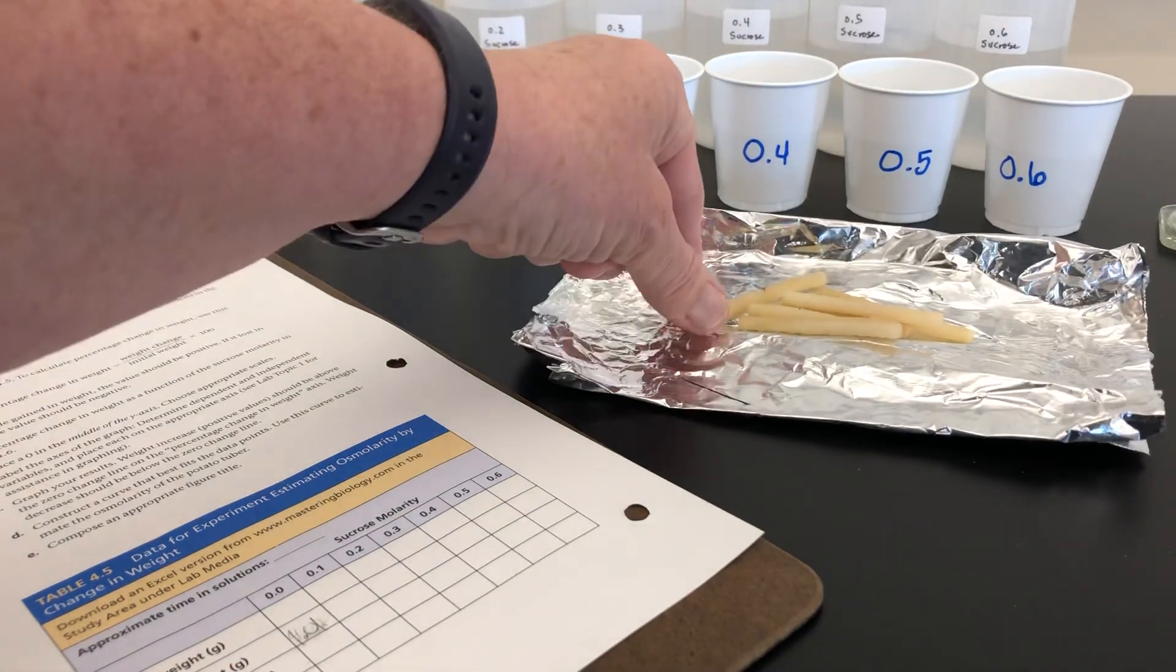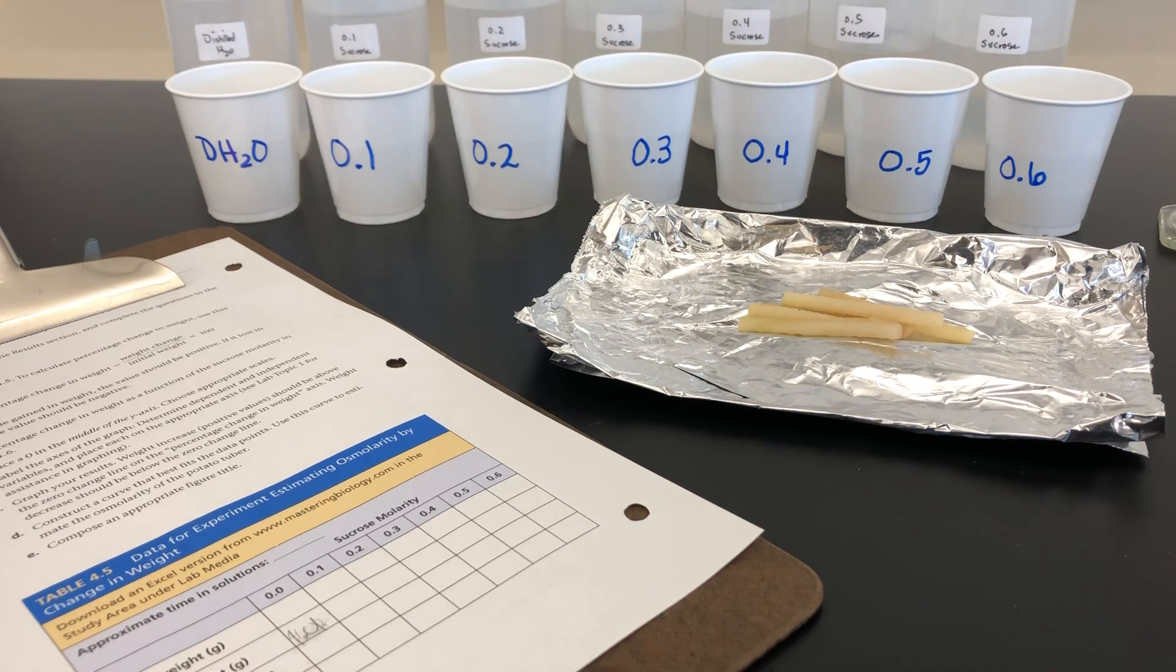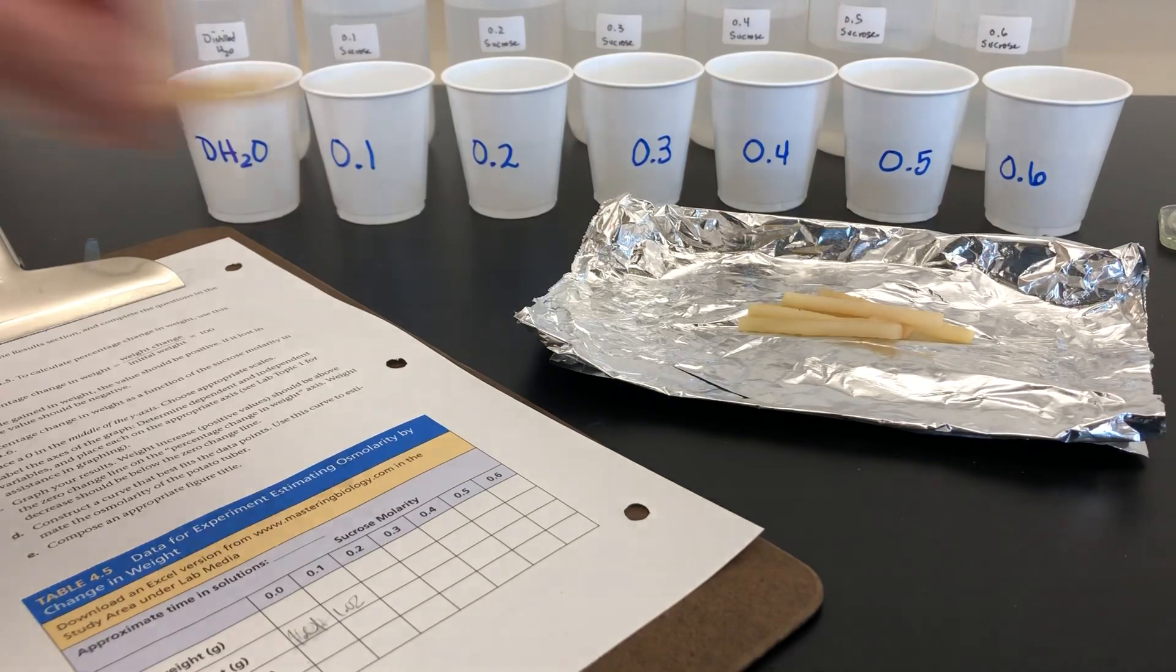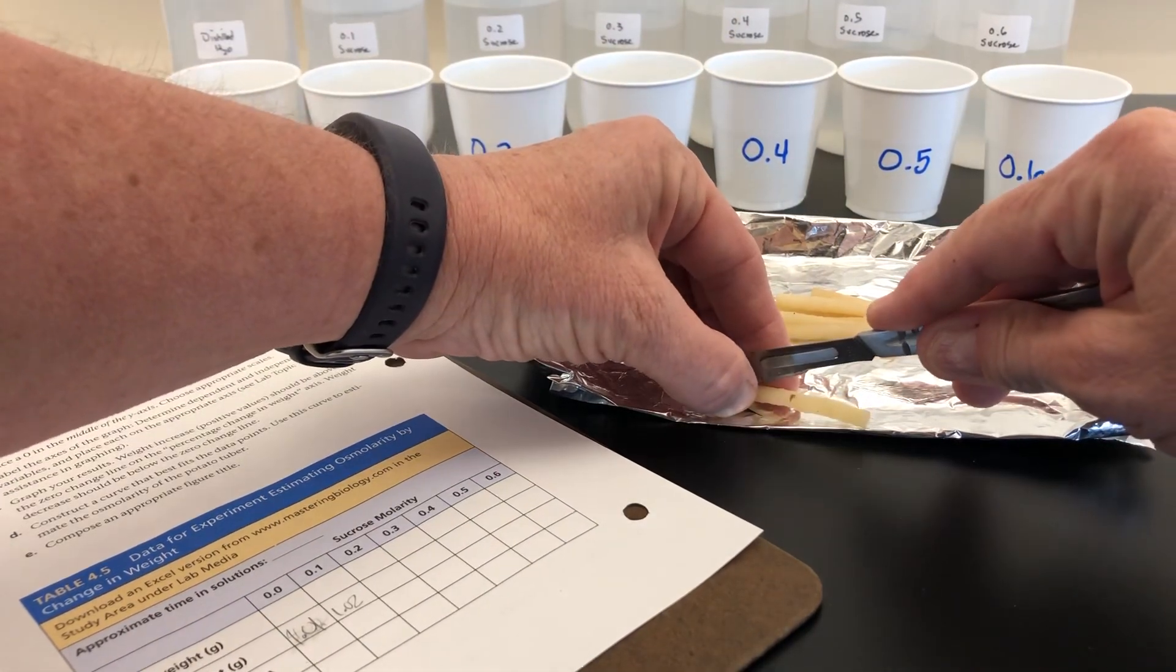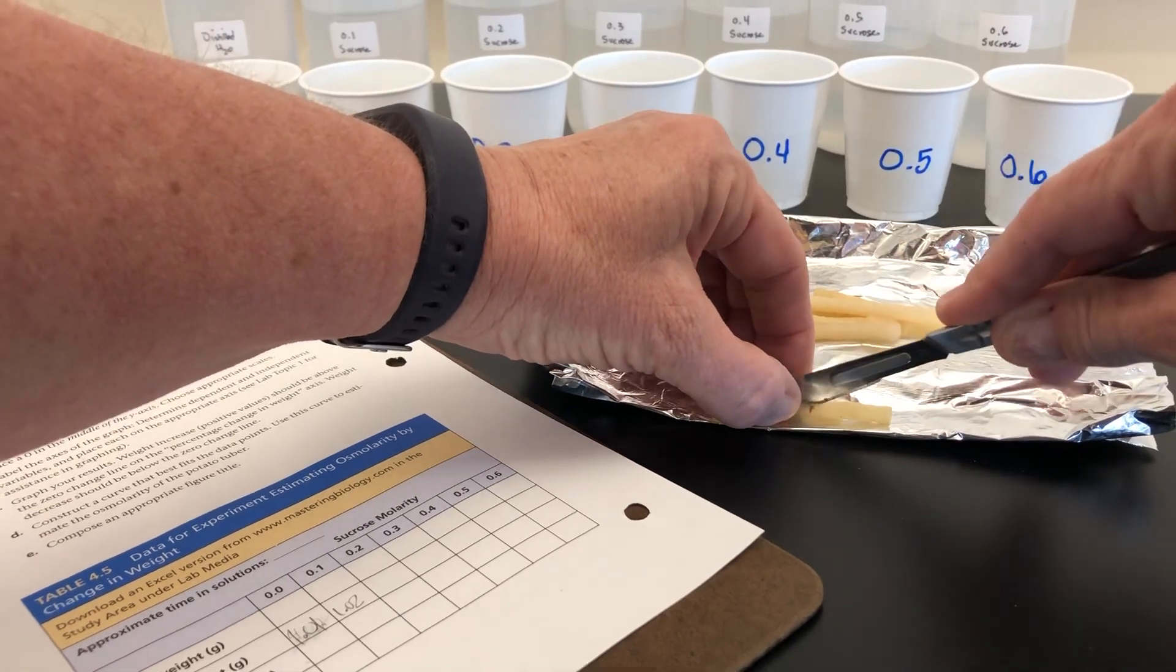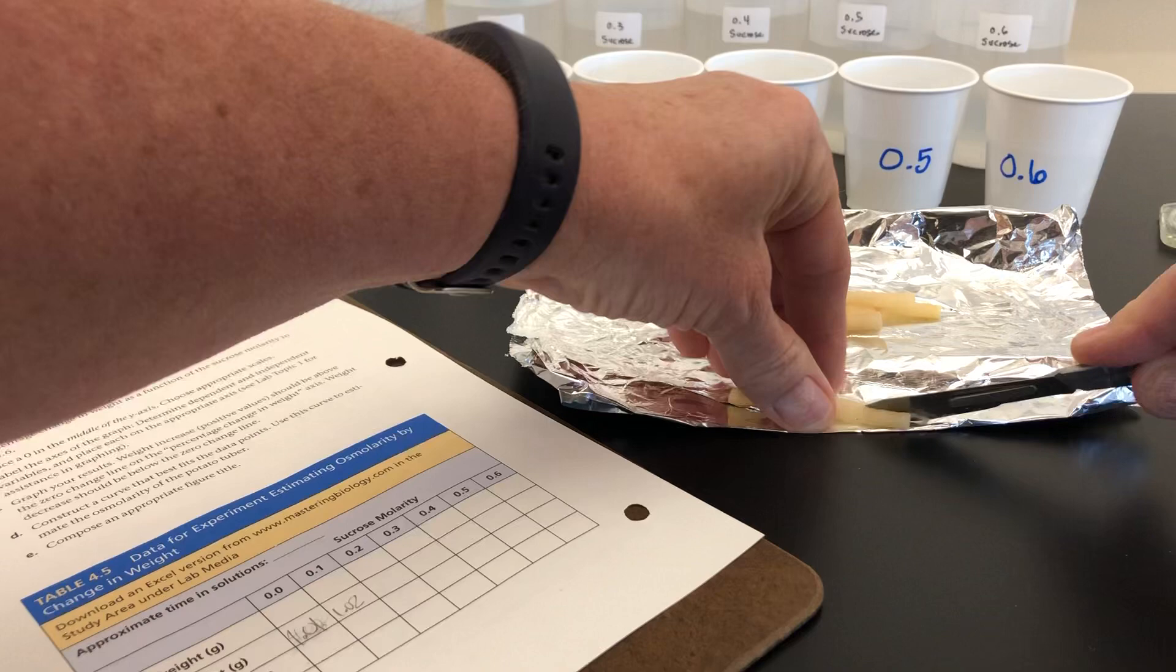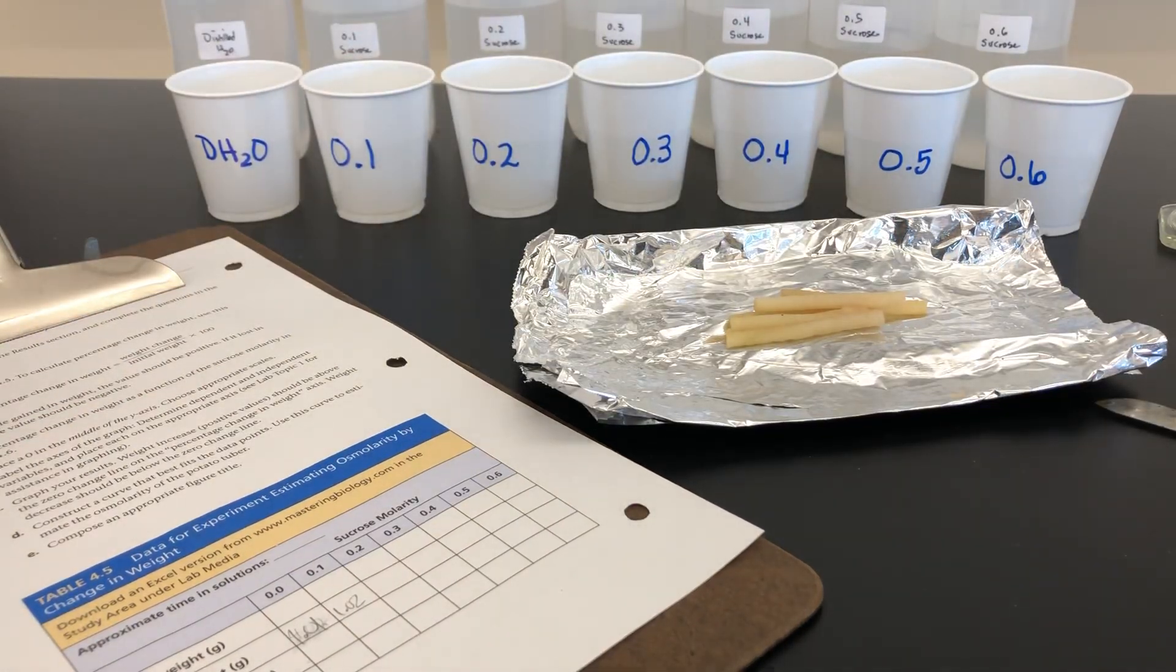The next cylinder weighs 1.02. Again, we'll cut it in half and put it in a sucrose solution of 0.1.